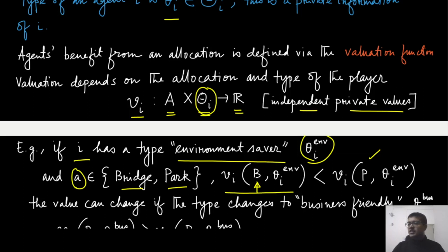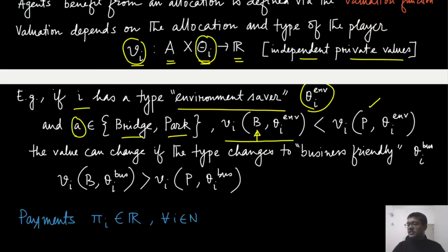But if you change this type for player i from environment saver to let's say business friendly, in that context, in that type, maybe building a bridge is a better choice than building a park. So that is the interpretation of valuation. Of course, the interpretation might change depending on which context you are looking at. But the abstract definition always takes an allocation and the type of the player and maps it to a real number. The real number itself says how much they value each of these alternatives under a certain type.